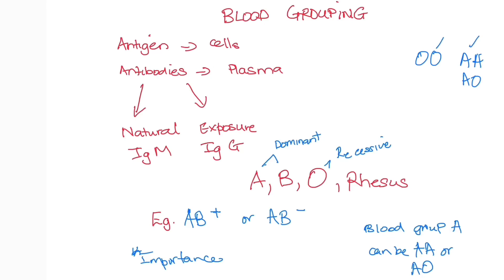The antigens are present on the red blood cells — it can be A antigen or B antigen. In the plasma you have the antibodies, which can be A antibodies or B antibodies. Antibodies can be natural antibodies such as IgM, which you find naturally in your body as you develop. There are also IgG antibodies, which you develop after exposure. For example, if you're Rhesus negative, you won't have the anti-D antibodies, but if you get exposed, you then develop the IgG antibodies for Rhesus.